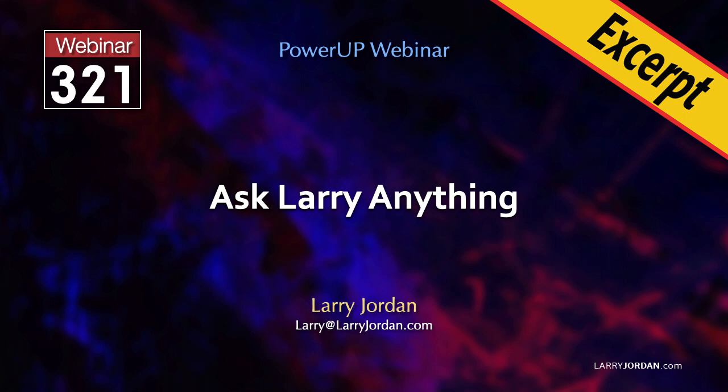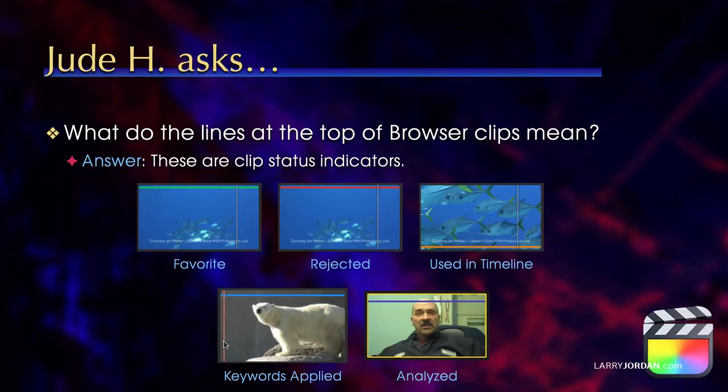This is an excerpt of a recent Power Up webinar called Ask Larry Anything. My name is Larry Jordan. In this short video tutorial, I'll explain what the different colored lines mean inside a thumbnail in Final Cut Pro's browser. Jude asks: what do the lines at the top of browser clips mean?